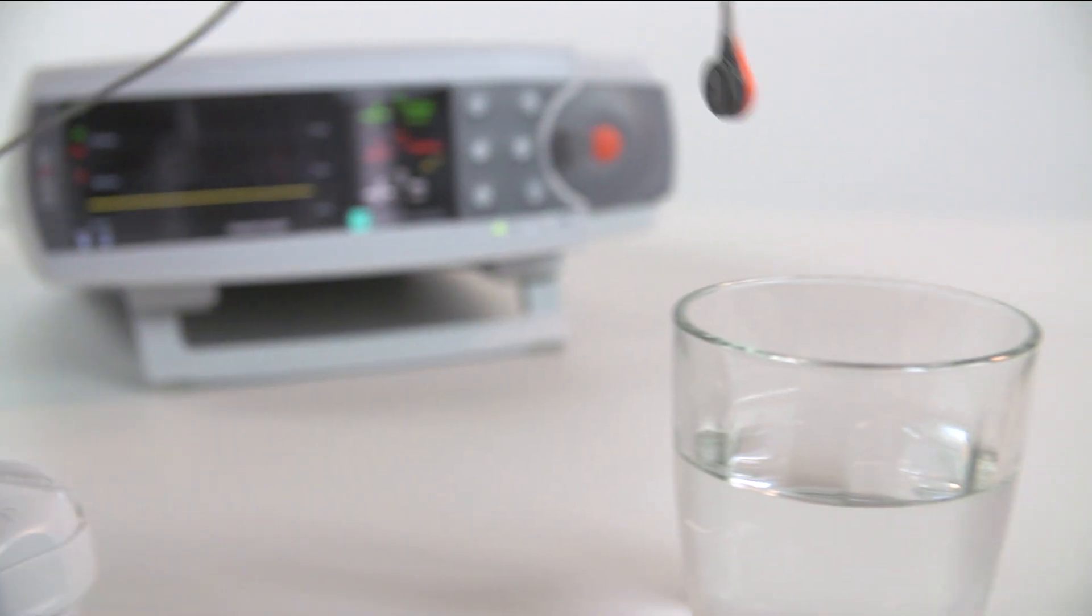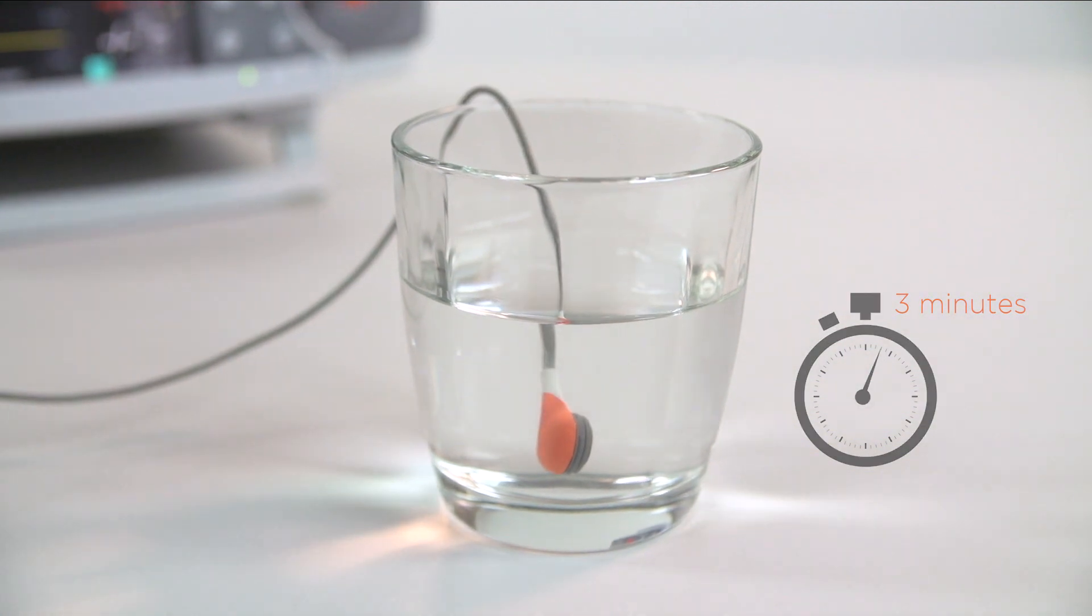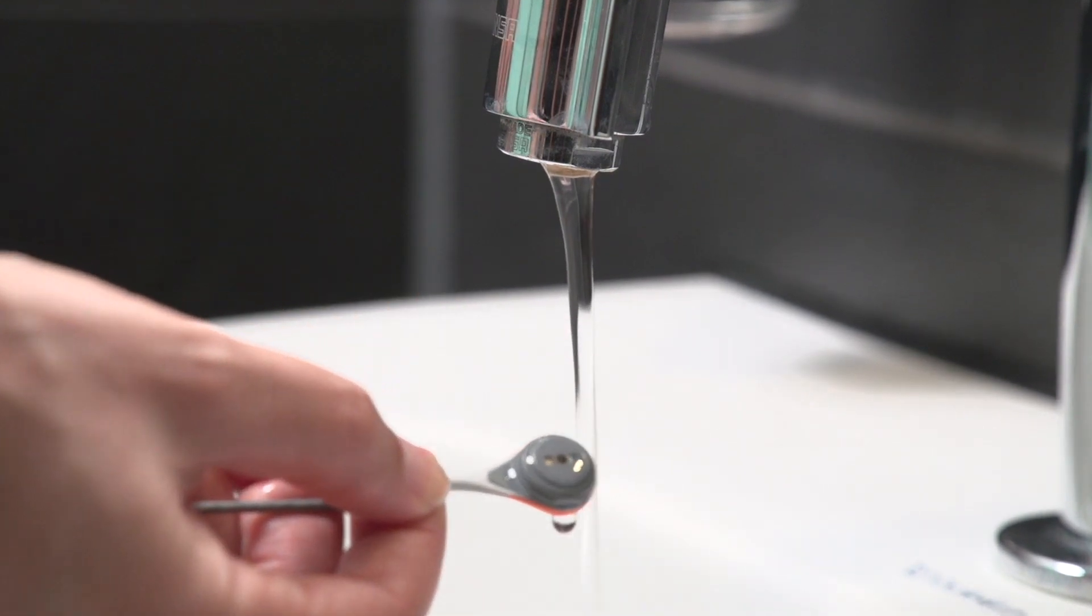Once the membrane is removed, immerse the sensor into clean, room temperature water for 3 minutes. After the 3-minute soak, gently rinse the sensor with clean water.